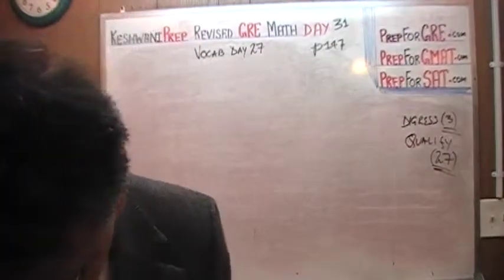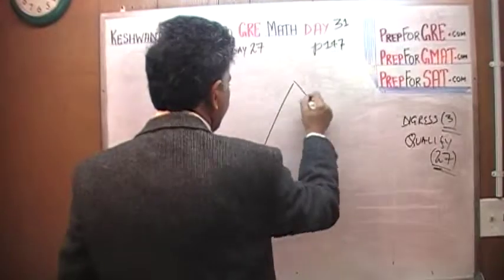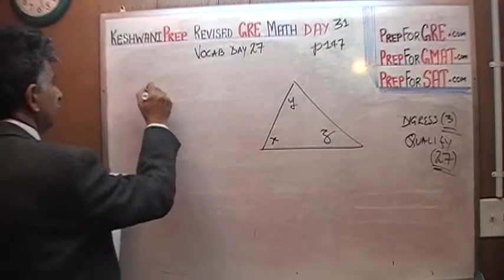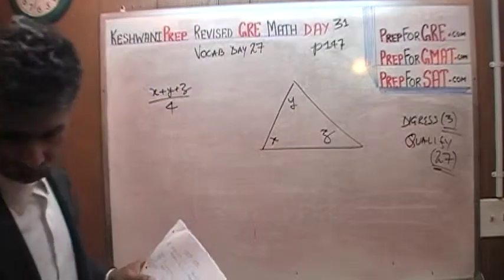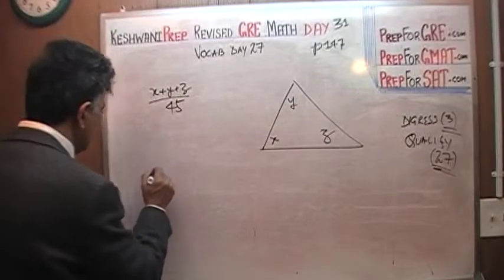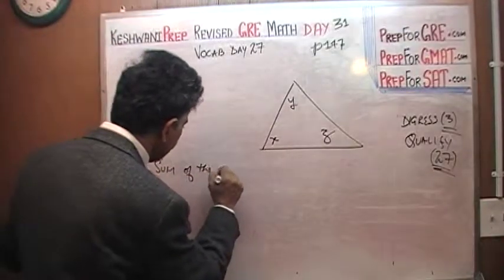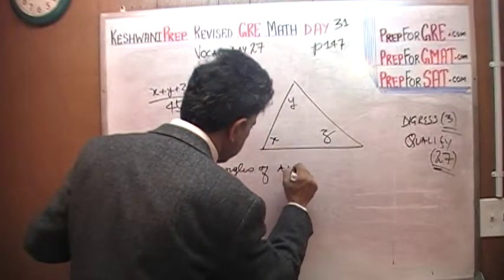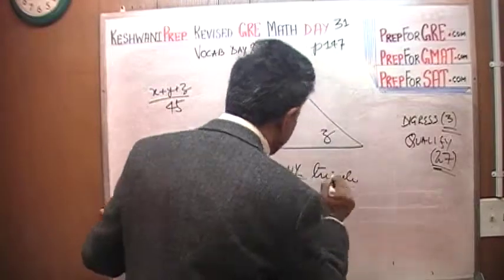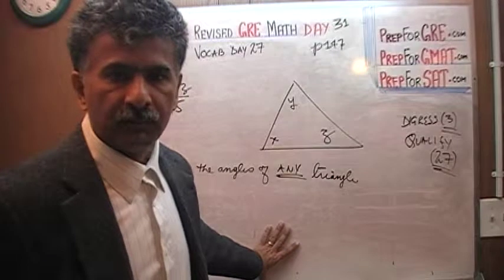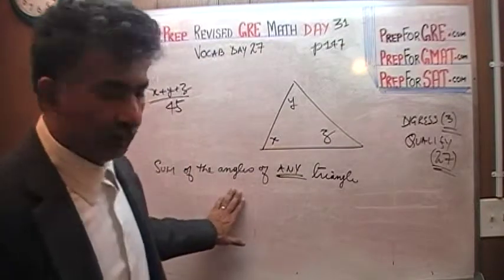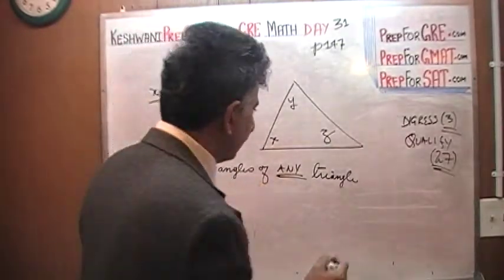Let's do the next question on the same page. In the next question, we are given a triangle with angles x, y, and z, and we are simply asked what is x plus y plus z over 45. Well, this is very simple. We know that the sum of the angles of any triangle — it doesn't matter which shape the triangle is, whether it's a right, equilateral, obtuse, acute, or isosceles triangle — the sum of the angles of any triangle equals 180.